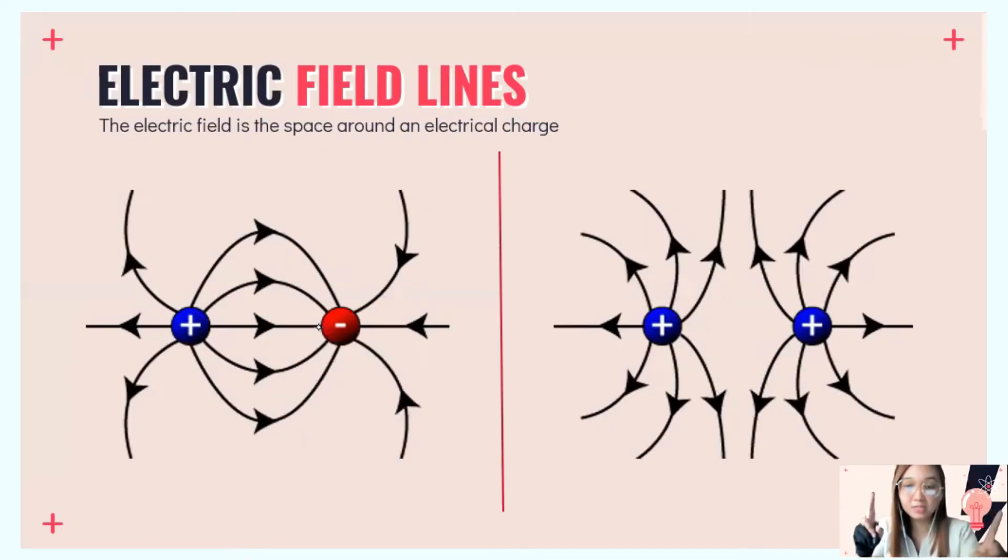What if both charges are the same? If they're both positive or both negative, according to electrostatic force, like charges repel. They repel, and their electric field lines don't meet.